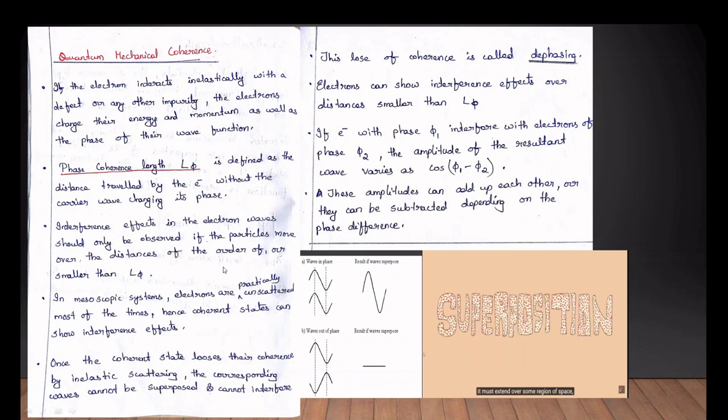If you use quantum mechanical coherence, you can use the main values. This is a summary: if you use quantum mechanical coherence, it will produce interferences. If you add the same phase, the outer phase is not the same phase.